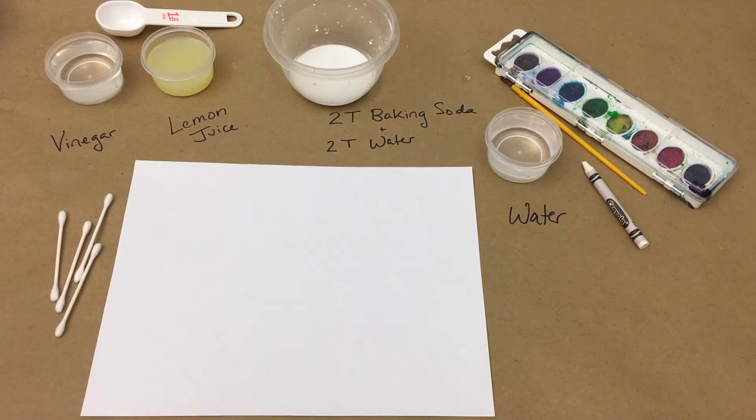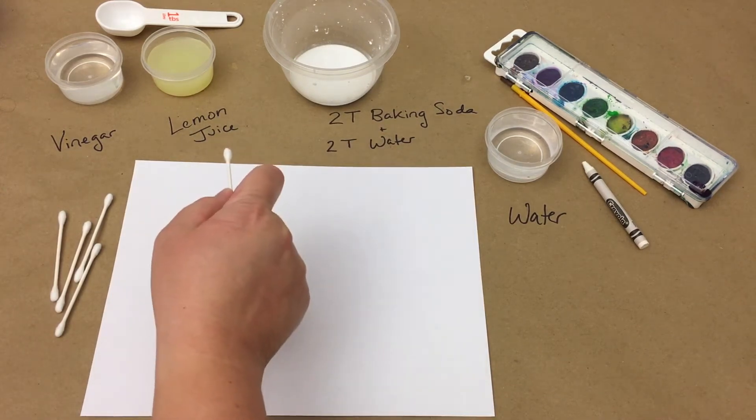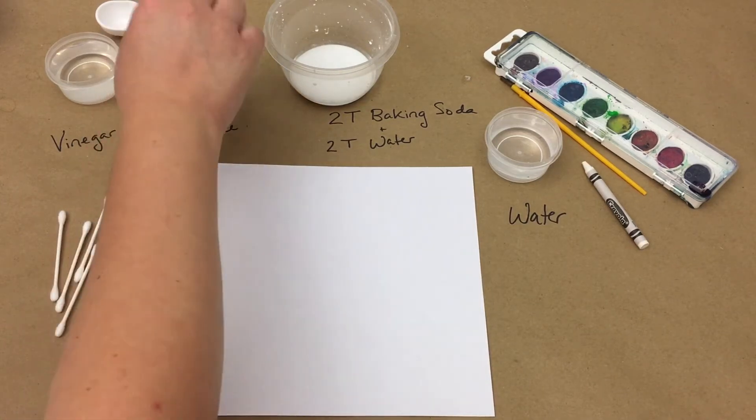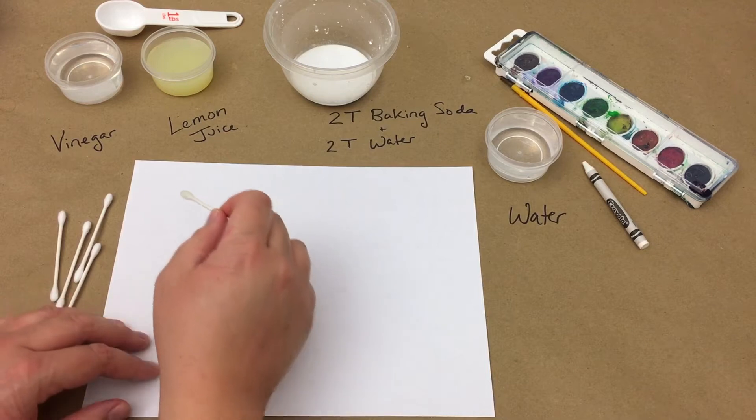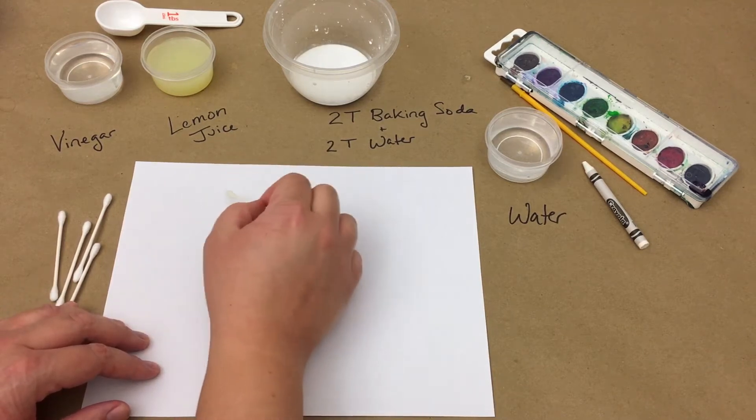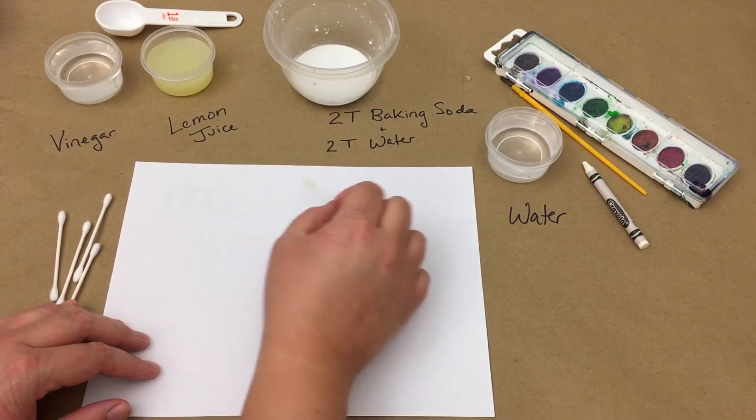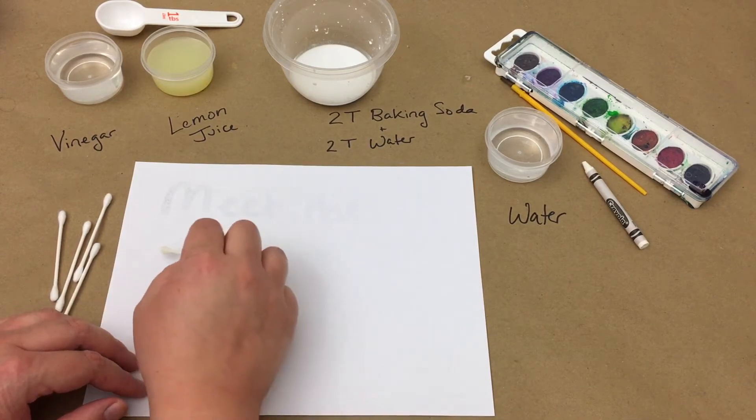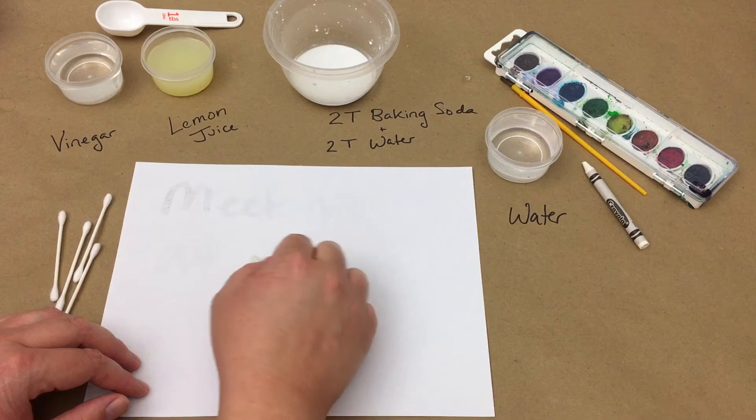First we're going to take an acidic liquid and write a message. I'm choosing to use lemon juice, but you could use vinegar. You could also use milk, as the milk fat will stick to the paper and be able to be revealed later. Dip your cotton swab in whatever liquid you are using, making sure to get it nice and wet, and then begin writing your message on the paper.